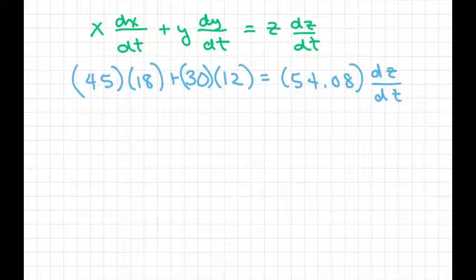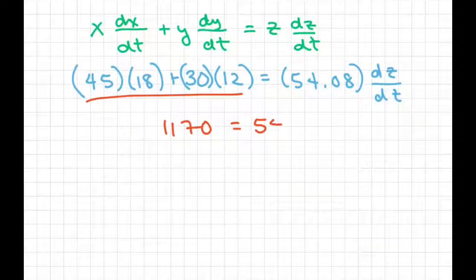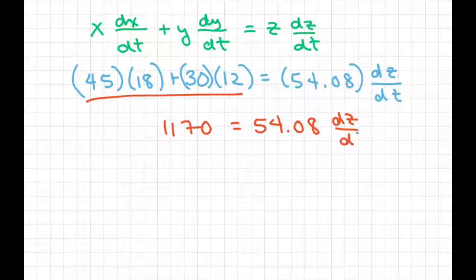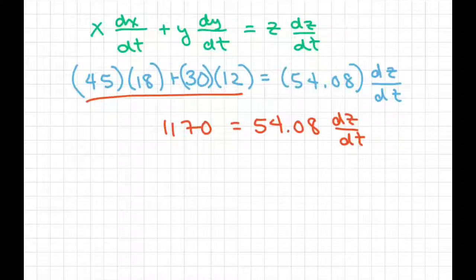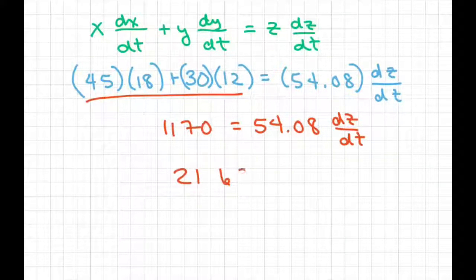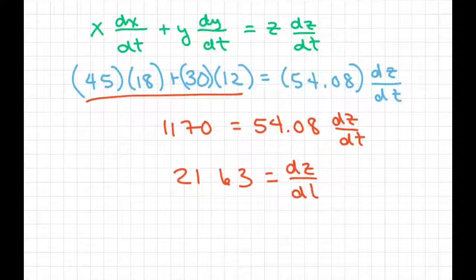So basically, when you clean all this up, you're going to get this part here. It's going to equal 1170. And then divide both sides by 54.08. And you're going to get 21.63 equals your rate of change with respect to time for the distance between the two boats.